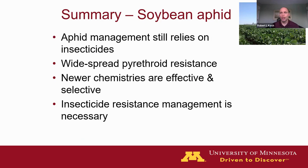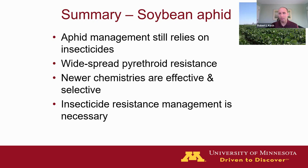To wrap up the soybean aphid section: management still relies largely on insecticides. We have widespread pyrethroid resistance in aphid populations — not every population is resistant, but they are out there, and unfortunately we don't know in advance which populations are resistant or susceptible. Fortunately, newer chemistries are effective, and some of those newer insecticides are selective — toxic to the pest but much less toxic to beneficial insects like predators and parasitic wasps, which can provide natural control of the pest population.